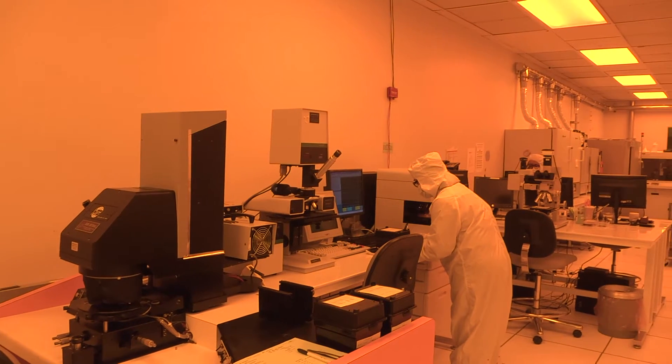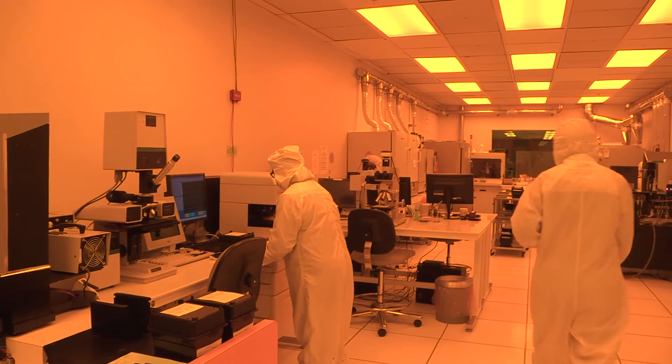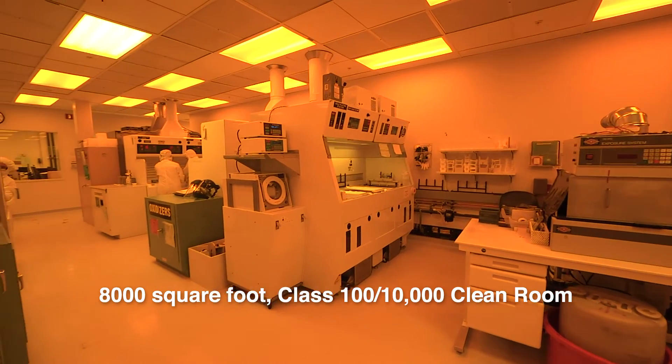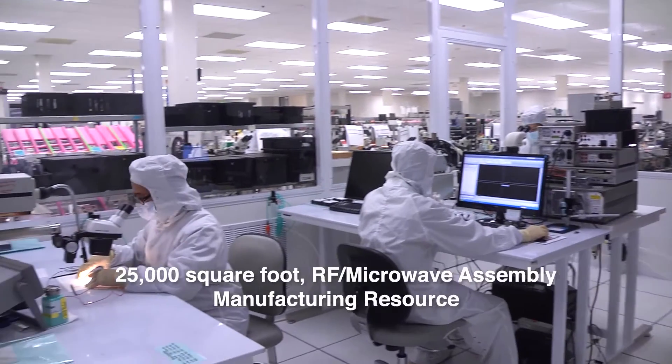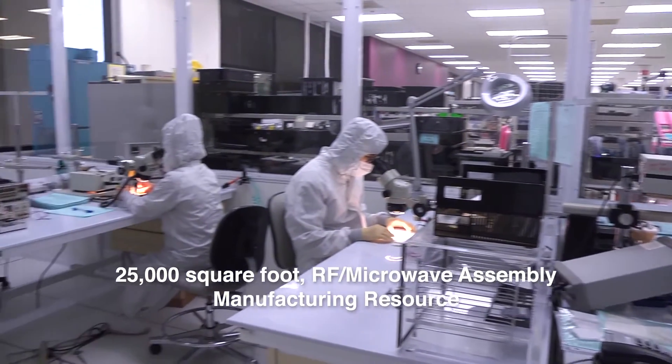Conveniently located south of Silicon Valley in Morgan Hill, California, Enritsu Microelectronics Fabrication Center includes an 8,000-square-foot Class 100-10,000 clean room, a 25,000-square-foot RF microwave assembly manufacturing resource, and a state-of-the-art machining center.